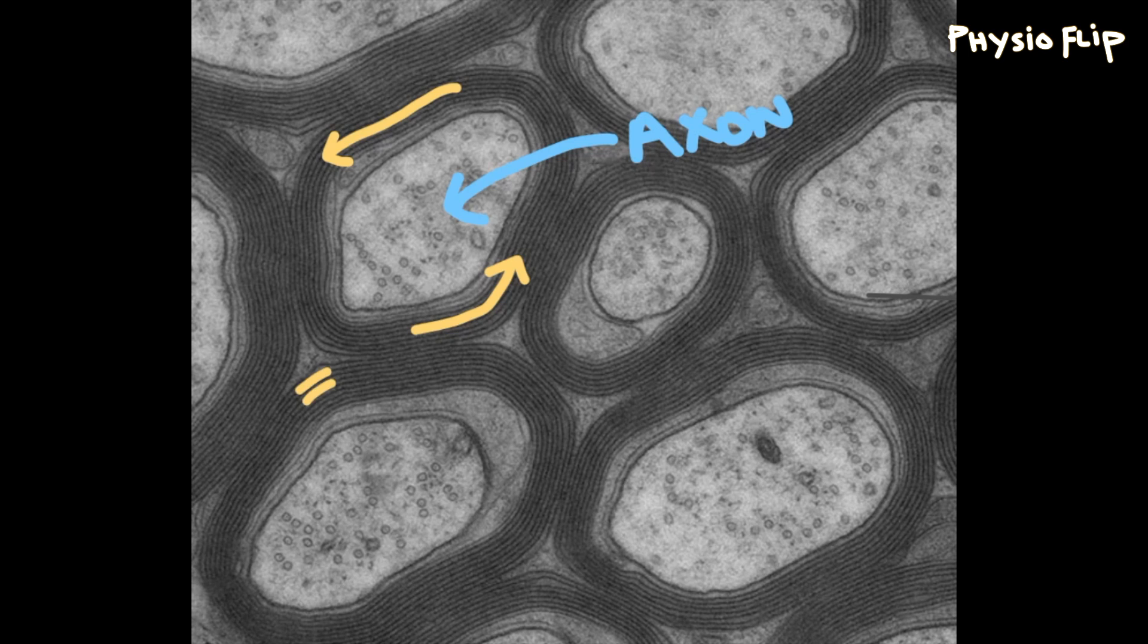Instead, one glial cell, either an oligodendrocyte or Schwann cell, has repeatedly wrapped itself around an axon to form this tight, repeating, thick myelin wrapping.